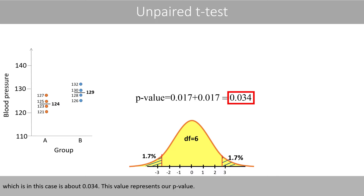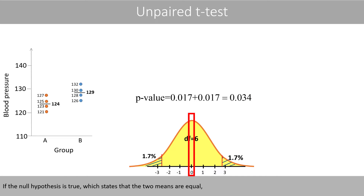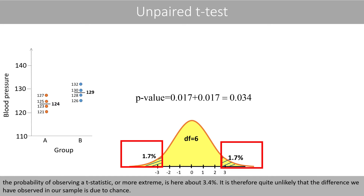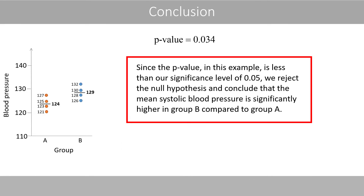This value represents our p-value. If the null hypothesis is true, we state that the two population means are equal. The probability of observing a t-statistic or more extreme is here about 3.4%. It is therefore quite unlikely that the difference we observed in our sample is due to chance. Since the p-value is less than our significance level of 0.05, we reject the null hypothesis and conclude that the mean systolic blood pressure is significantly higher in group B compared to group A.